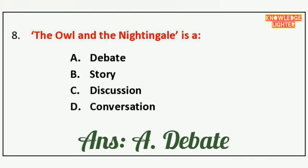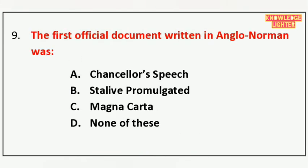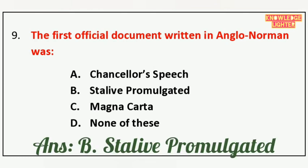Your next question is: The first official document written in Anglo-Norman was — option A Chancellor's Speech, option B Stalive Promulgated, option C Magna Carta, option D None of these. And the correct answer is option B Stalive Promulgated.